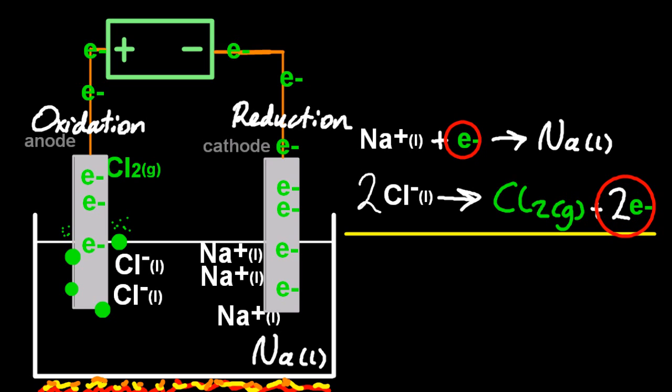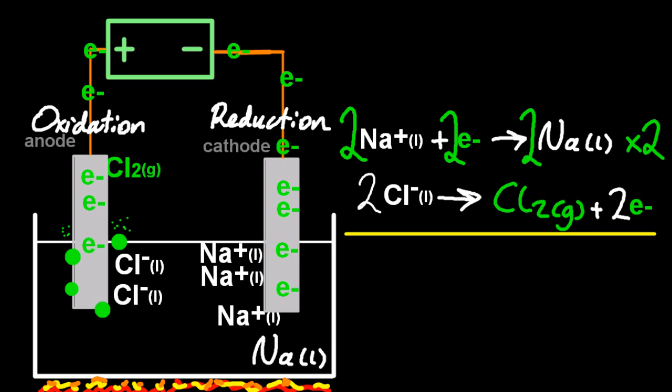Now notice the top equation has one electron, whereas the bottom equation has two electrons. And if I want to combine them, I have to balance the electrons. And I'm going to do that by doubling the top equation. Now I've got two electrons there as well. Cancel them out. And add up those two half equations to make the full equation.